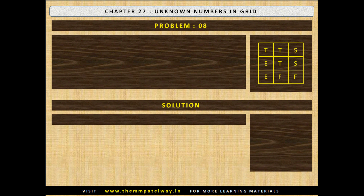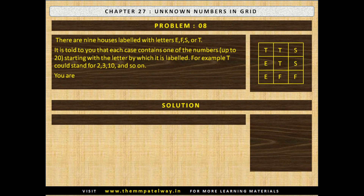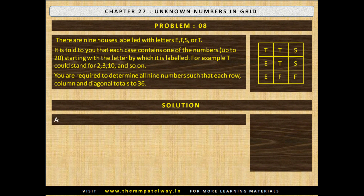Problem 8. There are 9 houses labeled with letters E, F, S and T. Each house contains one of the numbers up to 20 starting with the letter by which it is labeled. For example, T could stand for 2, 3, 10 and so on. You are required to determine all 9 numbers such that each row, each column and each diagonal totals to 36. Now stop the video and solve the problem. The solution is shown.